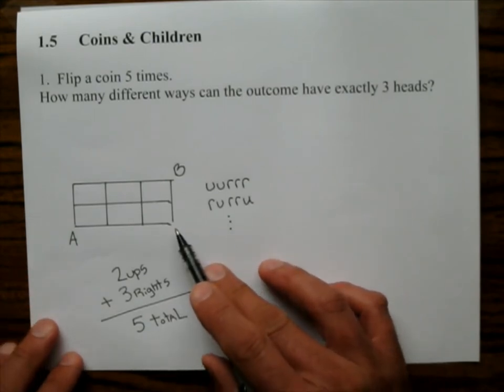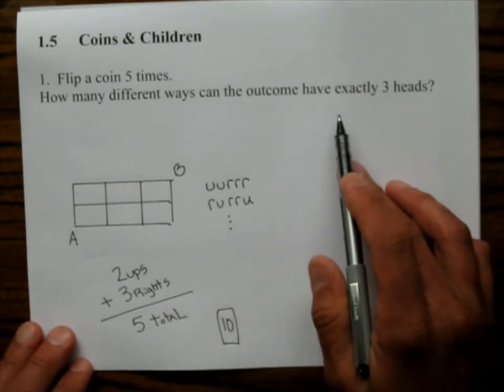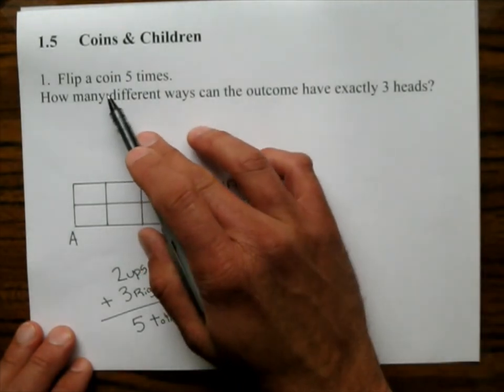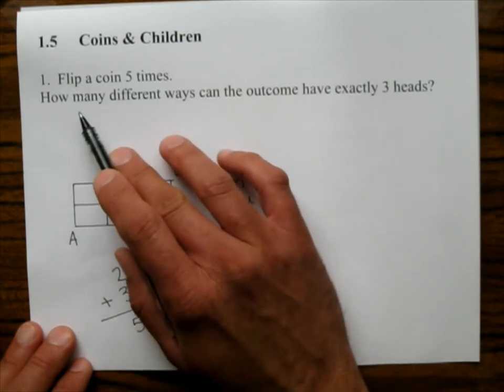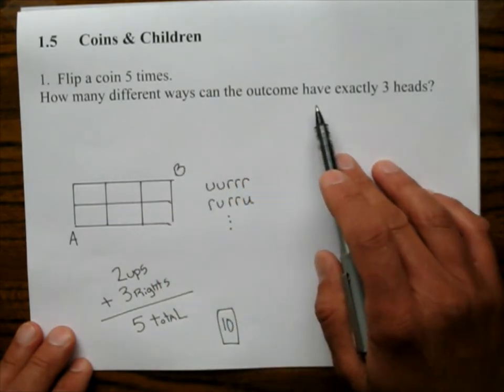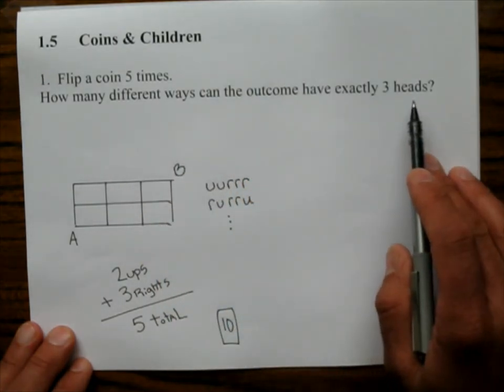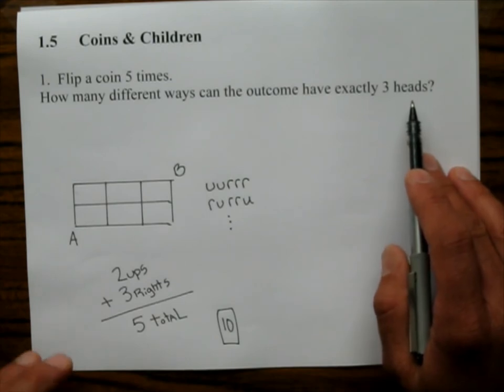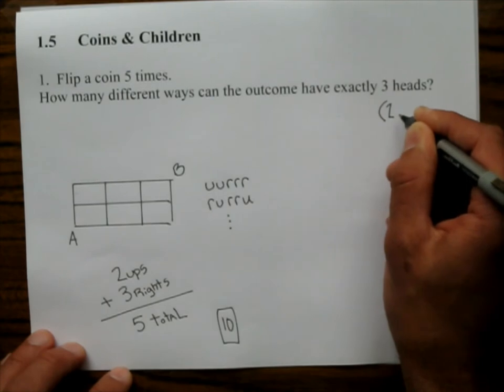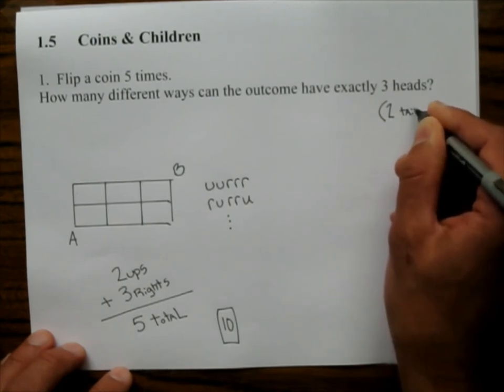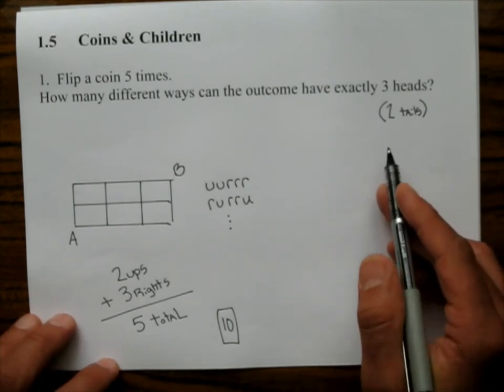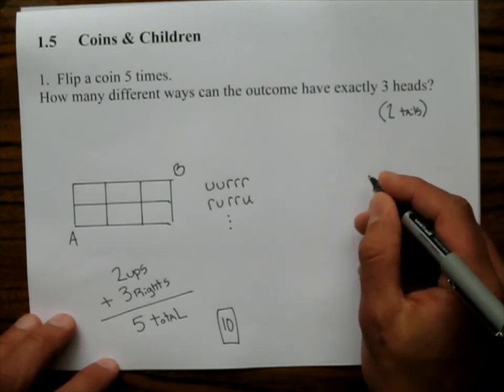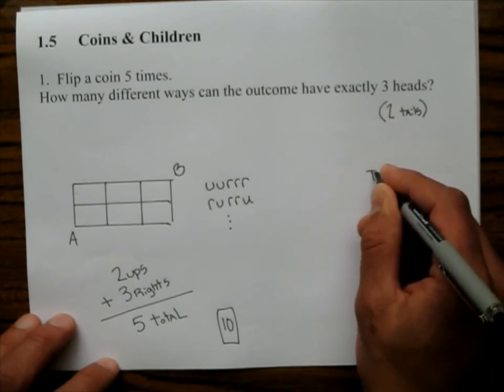You flip a coin five times. Now we can flip five coins if you want. That's the same thing as saying flip a coin five times. How many different ways can the outcome have exactly three heads? Well, when they say three heads, they also mean it's going to have two tails. Now the first way we can do this problem is to start listing all the things that can happen. Like you can say that we can have tail, tail, head, head, head.